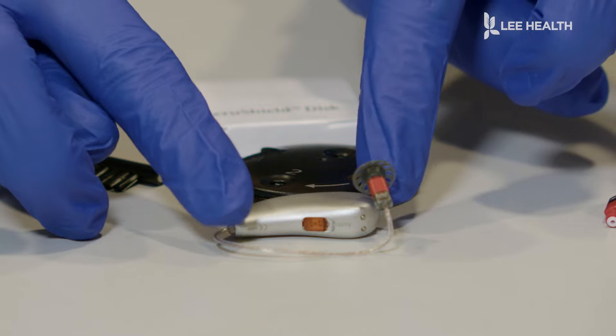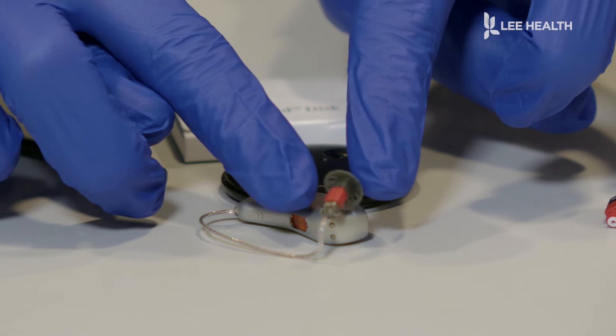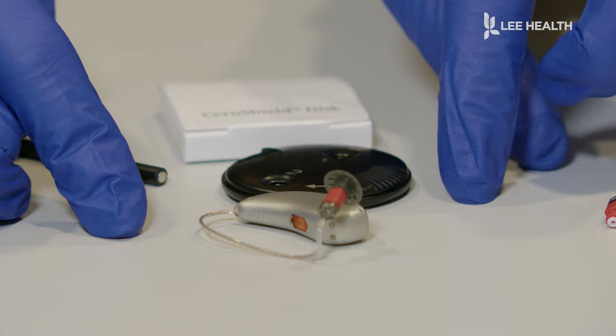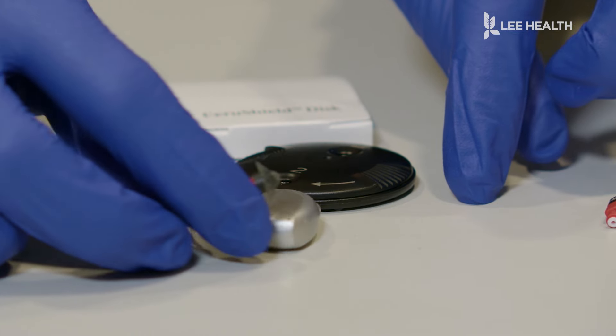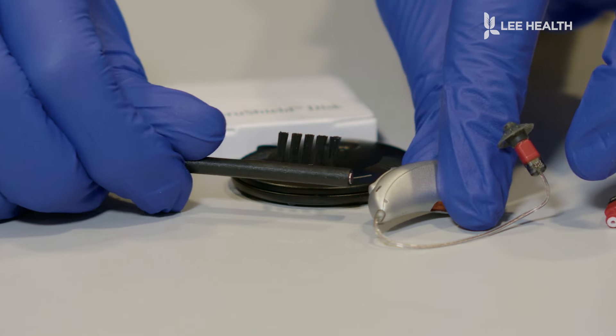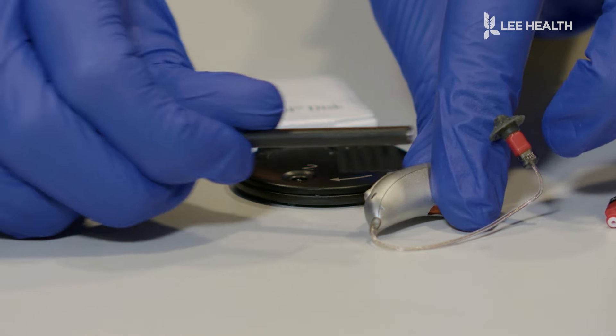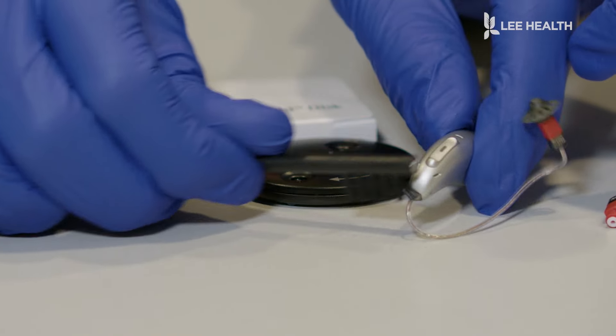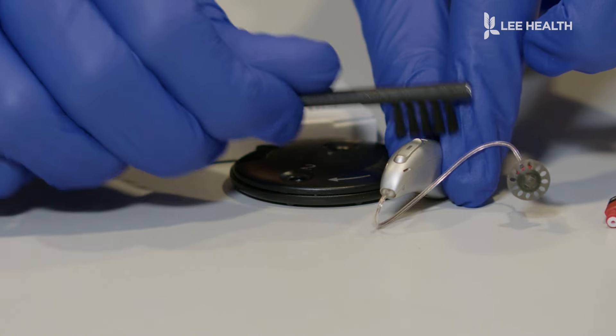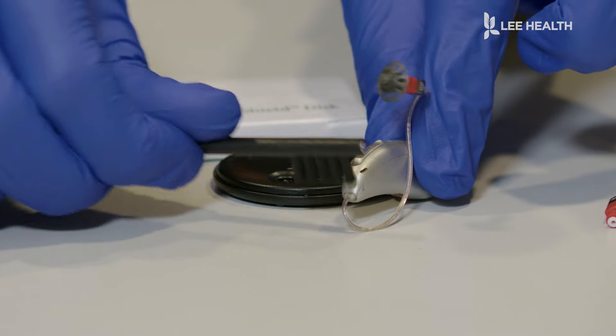If you have this style hearing aid with the thin wire and the removable rubber tip on the end, this is how we're going to clean it. First, I'm going to take the hearing aid here. If you have one of these little brushes, it's kind of like a bristle brush, it helps to brush off the top of the hearing aid where we have these little microphone holes where the sound goes in, just to make sure that's nice and clear of any debris.